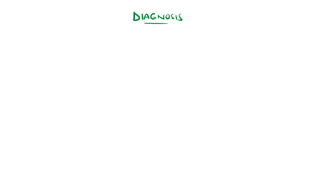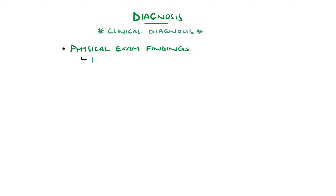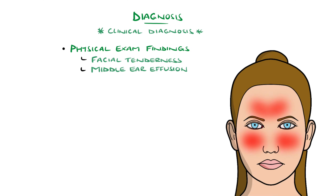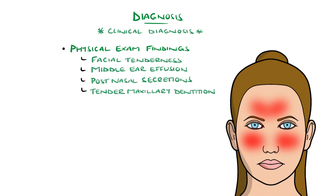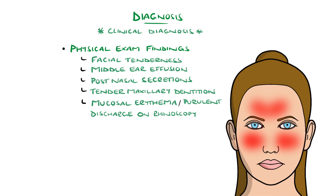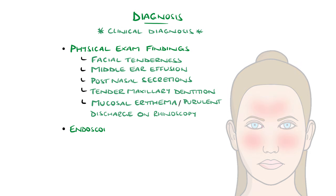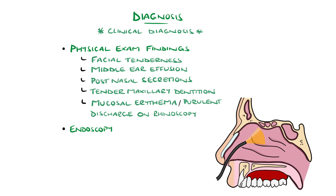Diagnosis is primarily clinical, meaning no specific tests or imaging are required. Physical exam findings include facial tenderness on palpation, middle ear effusion, post-nasal pharyngeal secretions or exudate, tender maxillary dentition — meaning the upper teeth — or mucosal erythema or purulent discharge on nasal cavity examination with rhinoscopy. Endoscopy is used typically in refractory cases, including flexible options which are preferred in children, and can show nasal discharge or drip, polyps, and edema.